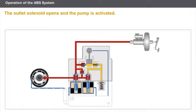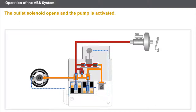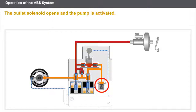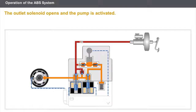Now let's look at the pressure reduction phase. If the wheel starts to lock, the computer reduces the pressure for the wheel concerned. The inlet solenoid remains closed, the outlet solenoid opens, and the pump is activated. The drop in pressure is instantaneous, thanks to the low-pressure accumulator. The pump action allows the fluid stored inside the accumulator to flow back to the master cylinder outlet circuit, thus preventing the pedal from being depressed. The backflow causes the pulses felt on the pedal.